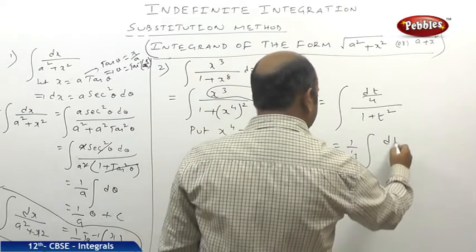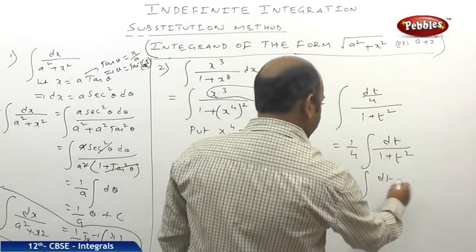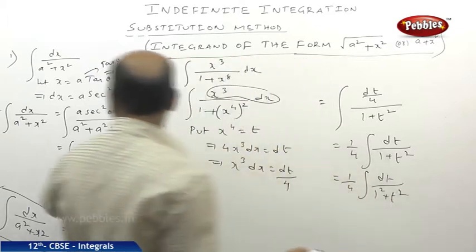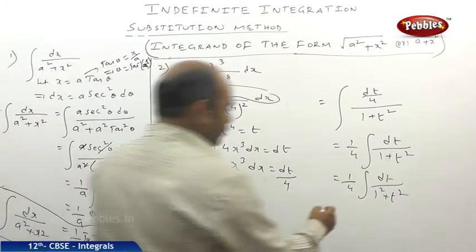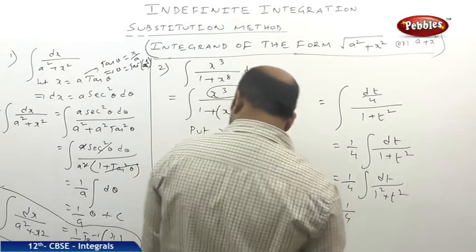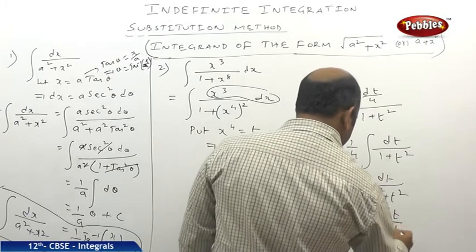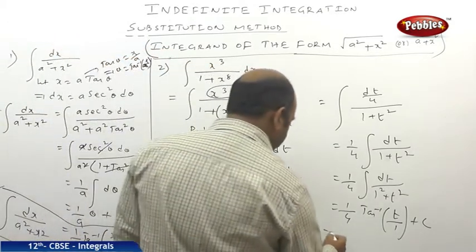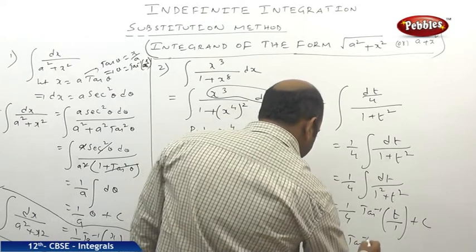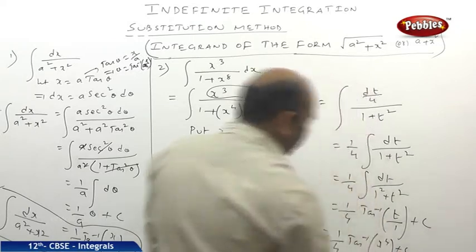So the integral becomes (1/4) times integral of dt by (1² plus t²), which takes the shape of the standard form dx by (a² plus x²) equal to (1/a) tan⁻¹(x/a) plus c. Here a equals 1, so the result is (1/4) times (1/1) tan⁻¹(t/1) plus c. Substituting back t equals x⁴, the answer is (1/4) tan⁻¹(x⁴) plus c.